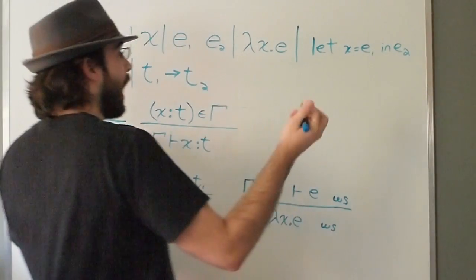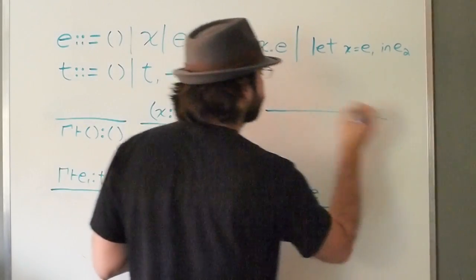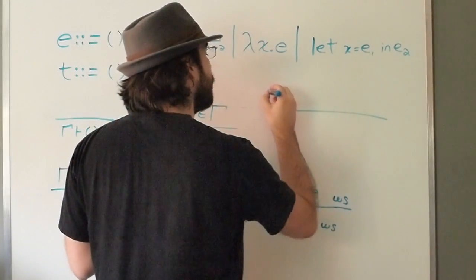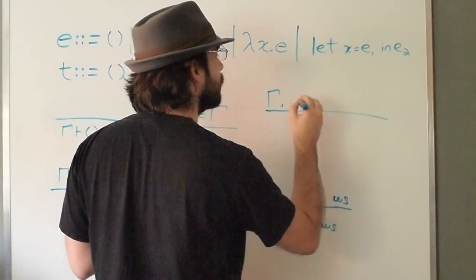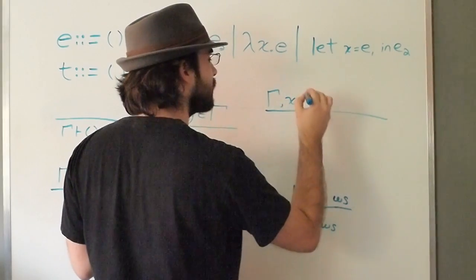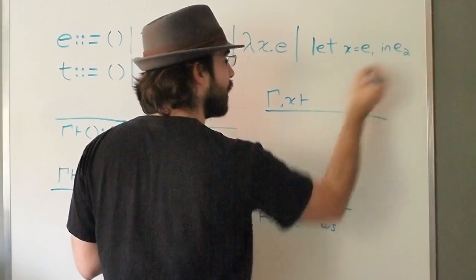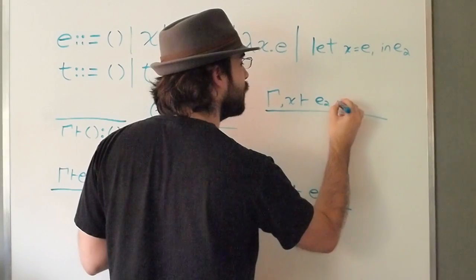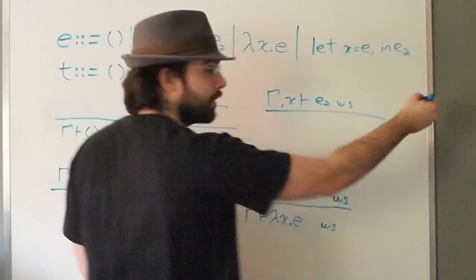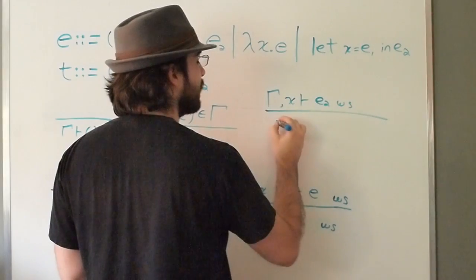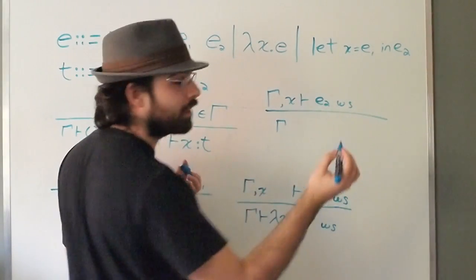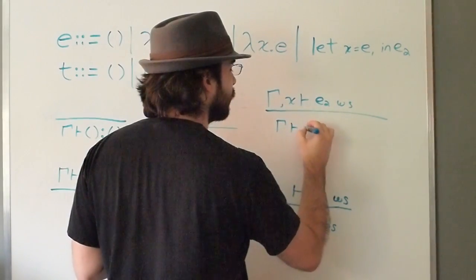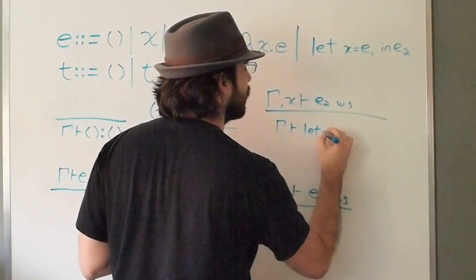I would say something like: if in the context augmented with x the body e2 is well scoped, and something about the argument, then in the context which is not augmented with x my let statement that x equals e1 in e2 is also well scoped.